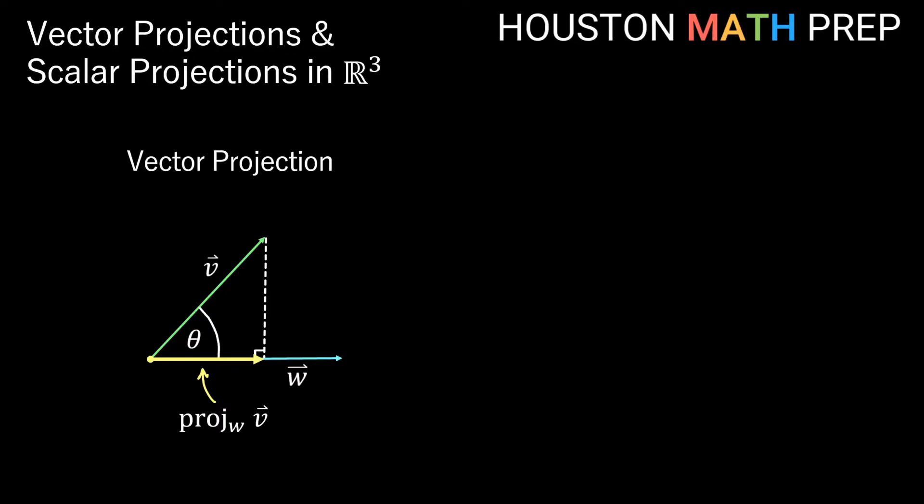This projection is pointing in the same direction as W, and vectors pointing in the same direction are multiples of one another. So we know this projection is going to be some multiple of vector W. It might be easier to find the magnitude of this projection rather than finding the multiple directly, so we'll change our formula to say it needs to be some multiple of a unit vector in the direction of W.